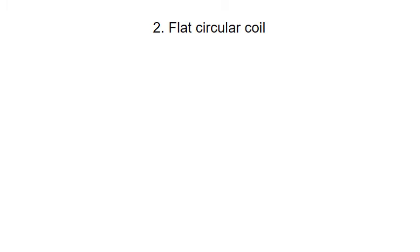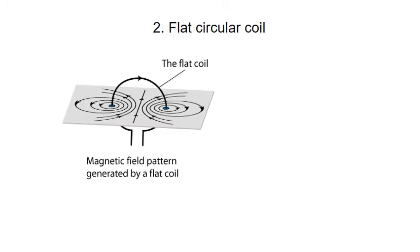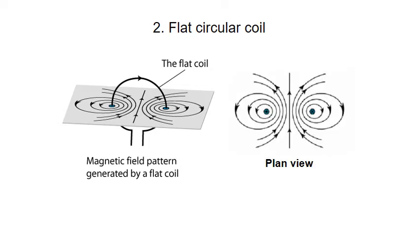So the first example was the straight wire. The next example is the flat circular coil. Here we have a flat coil and the magnetic field pattern generated by it — you can see it there in the plane view. You've got two wires, and it's basically a combination of the two wires to give the final magnetic field.